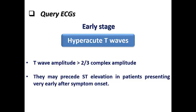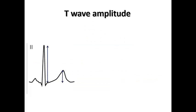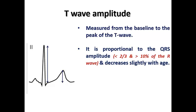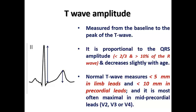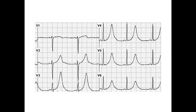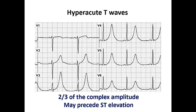The hyperacute T wave is detected when the T wave amplitude is more than two-thirds of the QRS complex amplitude, and it may precede ST elevation in patients presenting very early after symptom onset. Normally, T wave amplitude is measured from baseline to peak, usually less than two-thirds and more than 10% of the R wave amplitude — less than 5 mm in limb leads and less than 10 mm in precordial leads. When I see an ECG with hyperacute T waves but an isoelectric ST segment, I should not wait for ST elevation to develop — I should proceed to primary PCI.